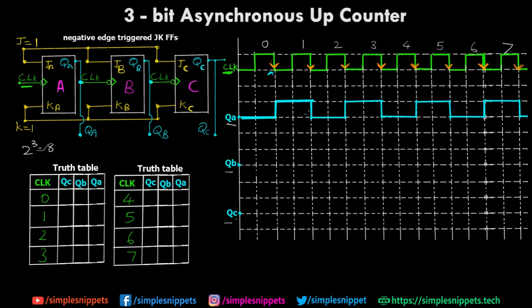Let me mark the negative edges of QA: this is the first one, this is the second, this is the third, and this is the fourth. Starting QB from 0, it stays 0 until the first negative edge of QA. At that negative edge, QB goes high and stays high till the next negative edge of QA, then goes low, then high again. So this is the signal diagram for QB.